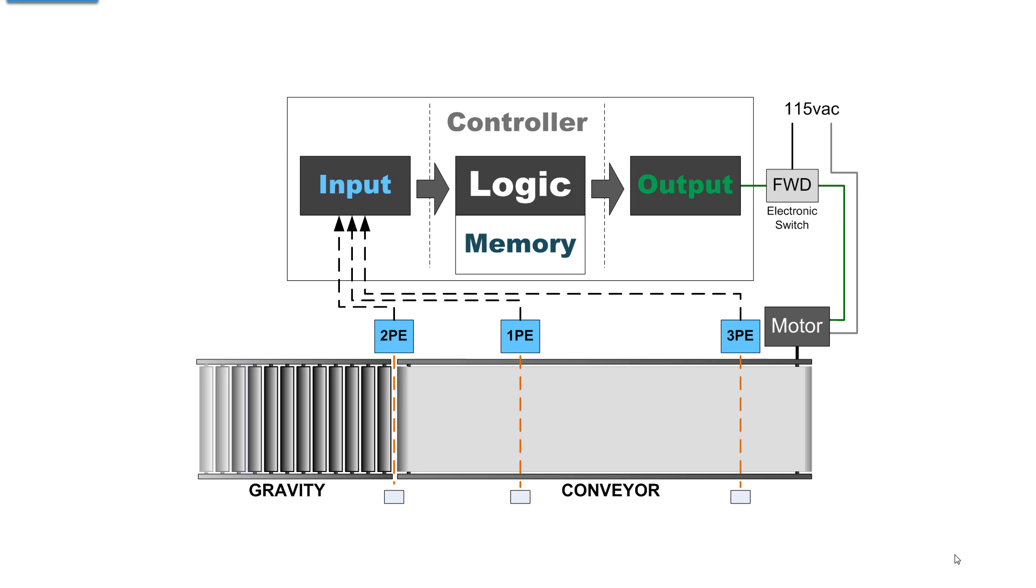Now with your eyes, you think of your eyes roaming the full length of the system. Well, a controller can't do that. It has to have a photoelectric sensor or some sort of sensor for every single position. Here we have three.